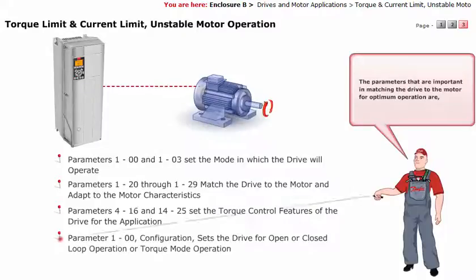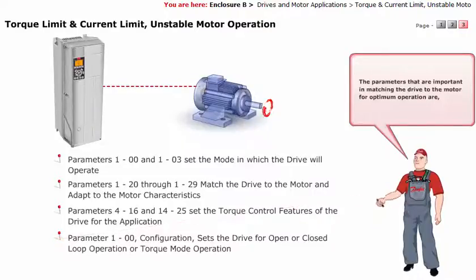Parameter 100 (configuration) sets the drive for open or closed loop operation, or torque mode operation.